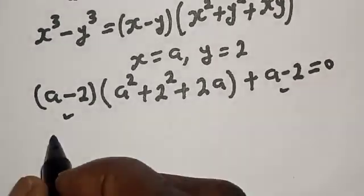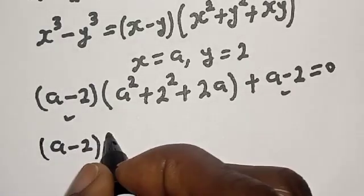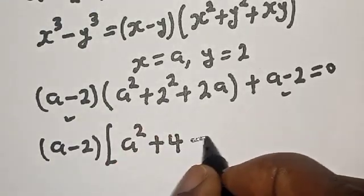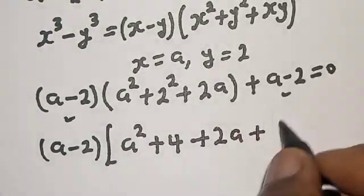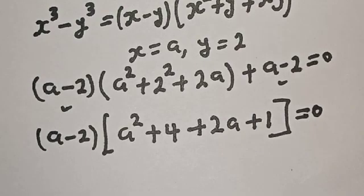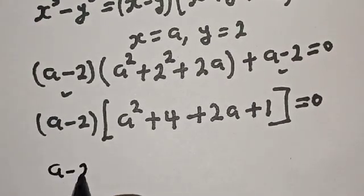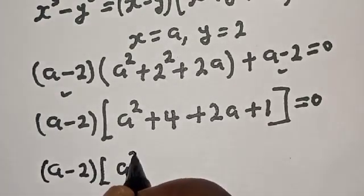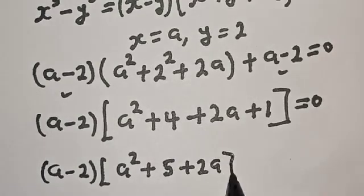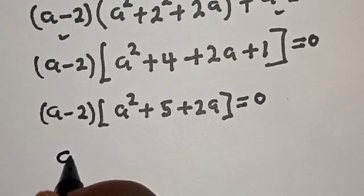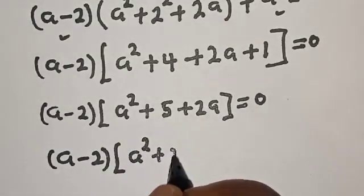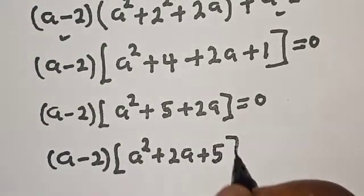We can see that (a minus 2) is a common factor. Bringing it out, we have (a minus 2)(a squared plus 4 plus 2a plus 1) equals zero, which gives (a minus 2)(a squared plus 2a plus 5) equals zero.